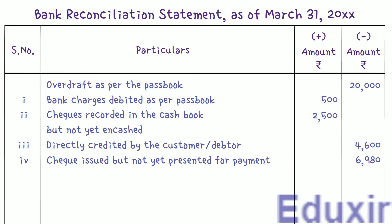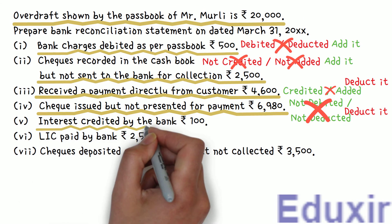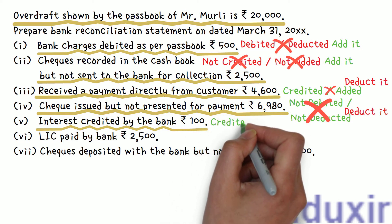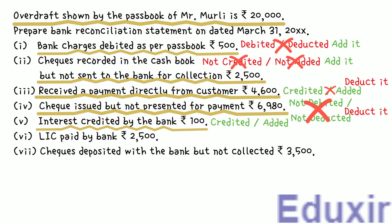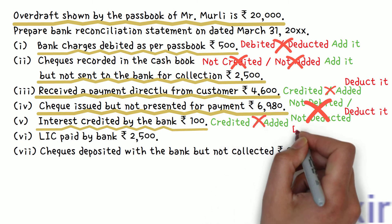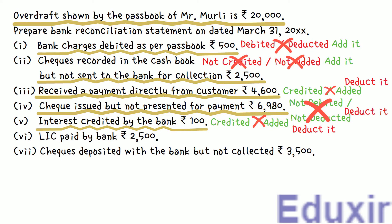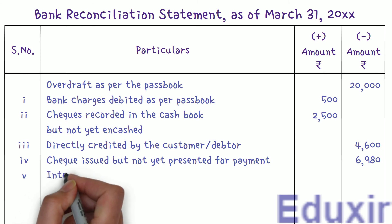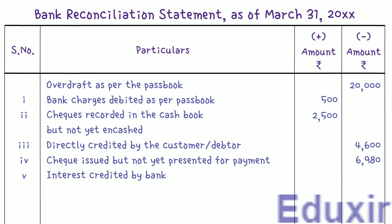Item 5: 100 rupees of interest is credited by the bank in the passbook. When it is time for paying the interest, the bank directly credits this amount in the passbook, but the business is not aware until the bank statement is received. So we need to deduct this amount from the passbook balance to get the cashbook balance. We write the particulars as 'Interest credited by bank' and enter 100 rupees in the minus amount column.